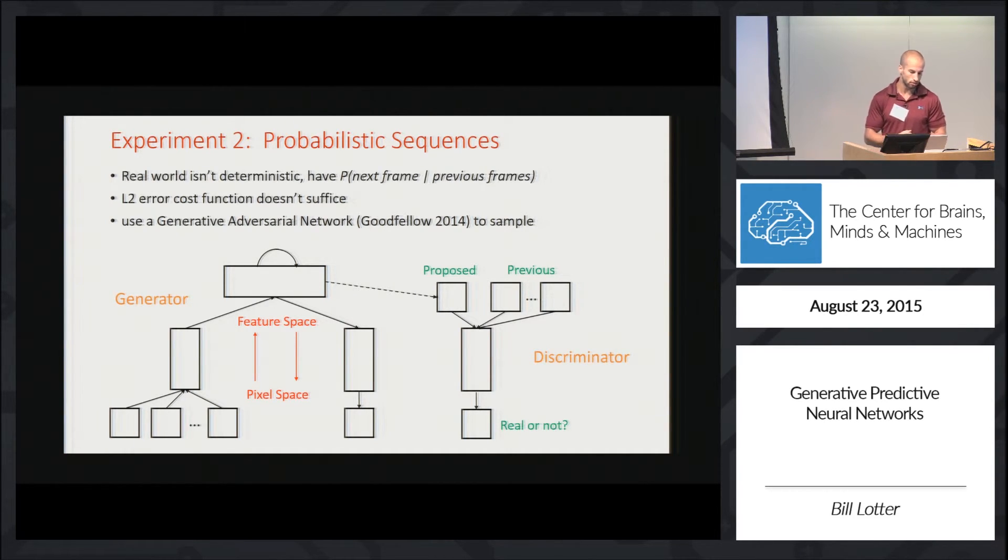To get around this, I've used a formulation called the generative adversarial network, introduced in a paper by Goodfellow et al. in 2014. Essentially, you have a generator network and a discriminator network. The generator tries to produce a proposed frame, and the discriminator says if it looks real or not. You train these in an alternating fashion to compete against each other, with the eventual goal of developing a generator that can sample from this probability distribution.